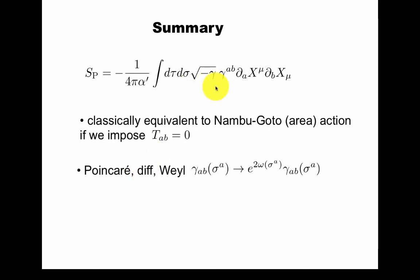This action has symmetries: Poincaré in d dimensions on this index, it has diff symmetry in two dimensions on these indices, and it has this, at this point, perhaps somewhat mysterious Weyl symmetry of rescaling of the worldsheet metric.